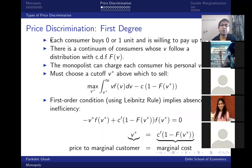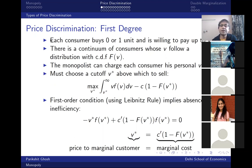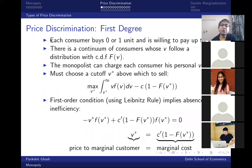One problem with charging different prices to different consumers is arbitrage. You could buy the Indian edition and sell it to American students at a profit. That may or may not be feasible. Arbitrage is impossible for certain products — like services such as haircuts. You can't arbitrage services; I can't get a haircut at a cheap student rate and then sell it to somebody else.